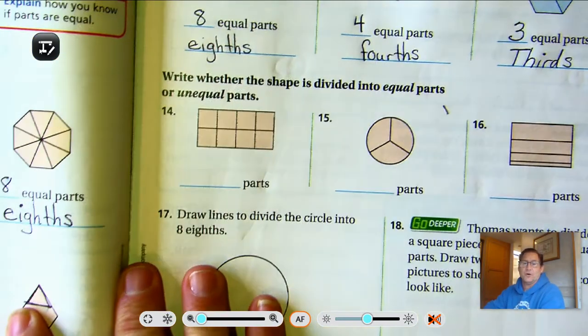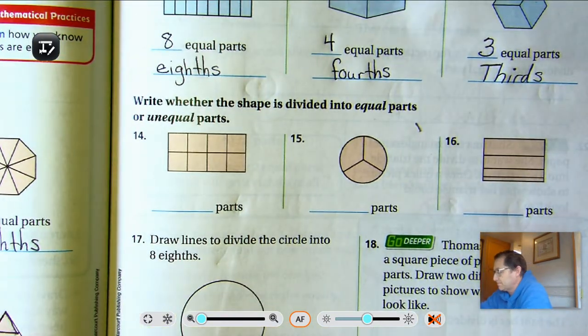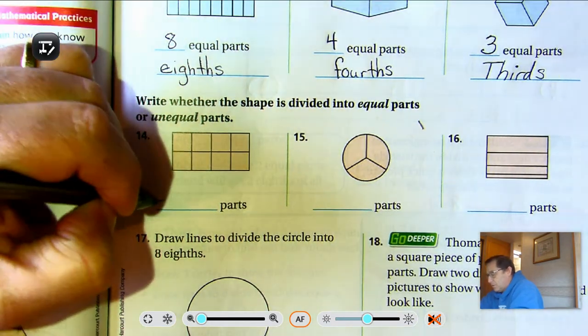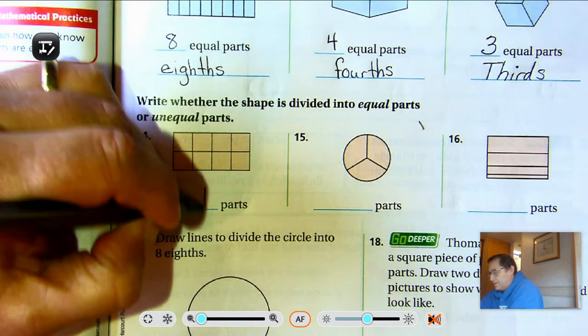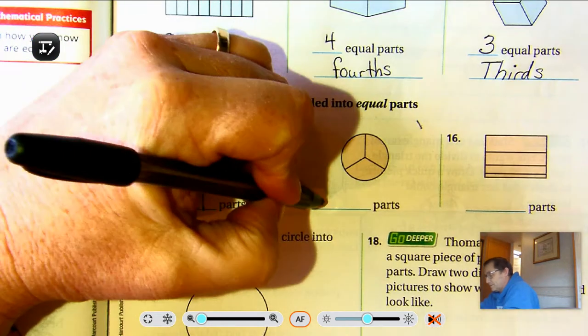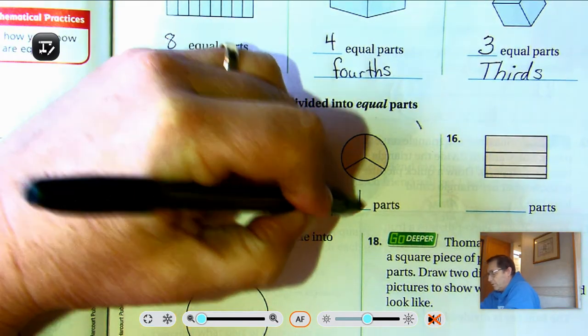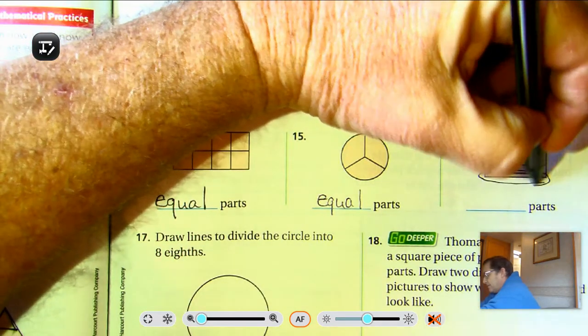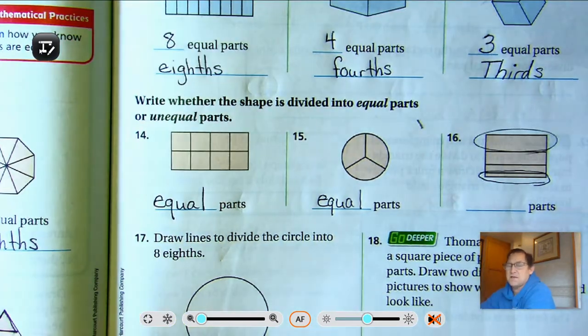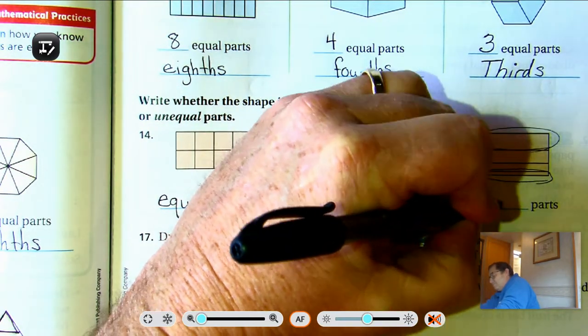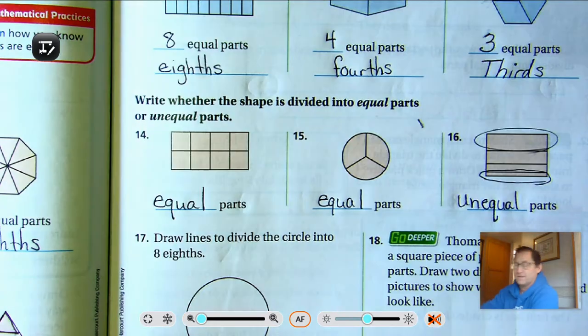Fourteen, tell whether these are equal or unequal parts. Well, these all look the same. So those are equal parts. Fifteen, those also look to be all the same. So equal parts. And sixteen, though, if I look at this piece, compared to that piece, they're not the same, are they? So those are unequal.